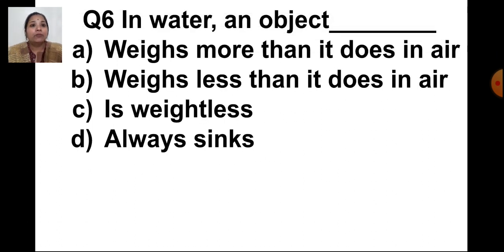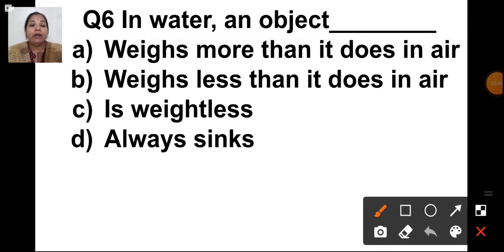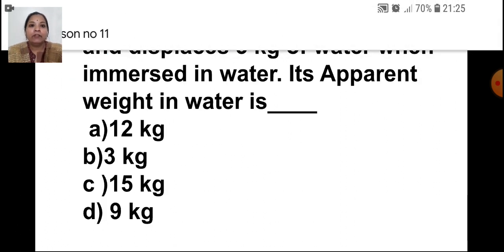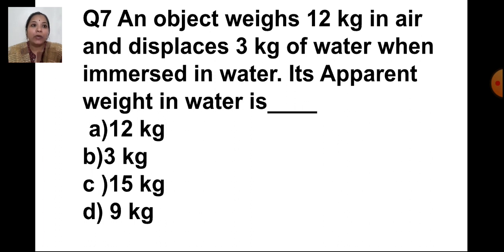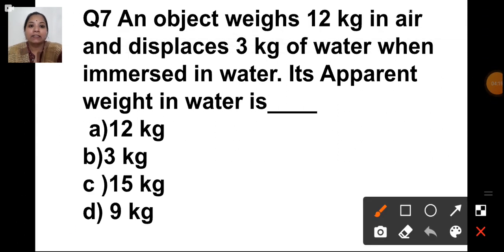In water, an object — options are: weighs more than it does in air, weighs less than it does in air, is weightless, always sinks. We have discussed that whenever an object is in water, it weighs less than it does in air, and we have also performed an experiment for this. The next question: an object weighs 12 kg in air and displaces 3 kg of water when immersed. Its apparent weight is — apparent weight equals weight in air minus weight of water displaced. The answer is D, 9 kg.